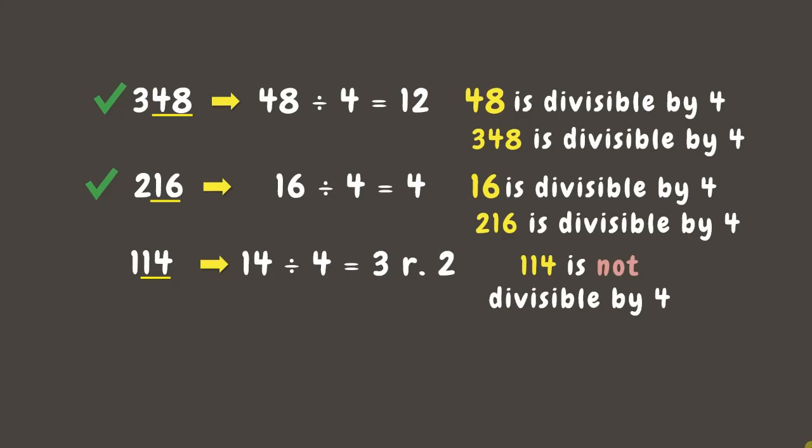Lastly, we have 700. We can see that its last two digits are zeros. Since all numbers with zeros as the last two digits are divisible by 4, we can say that 700 is divisible by 4.